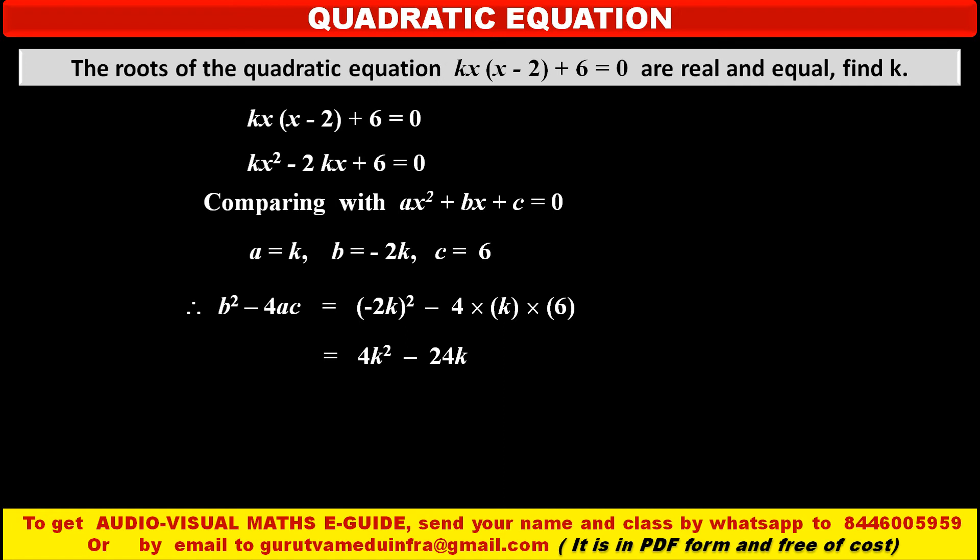4 into 6, 24, so 24k. So this is the value of discriminant, b square minus 4ac, which is equal to 4k square minus 24k. But it is given that the roots of this quadratic equation are real and equal. If the roots are real and equal, that means value of discriminant is 0.